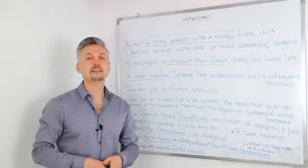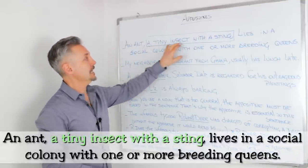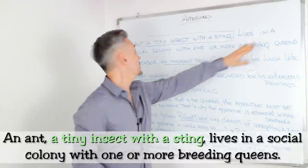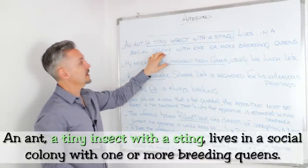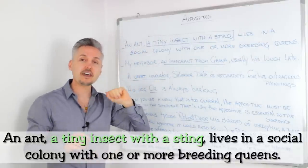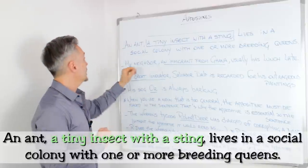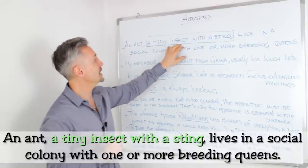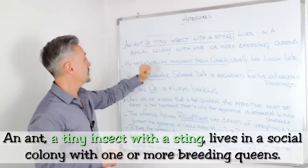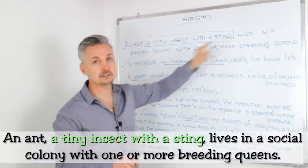So let's look at the examples now. An ant, a tiny insect with a sting, lives in the social colony with one or more breeding queens. This is longer than the one that I gave you at the beginning of the lesson. In this case, we have 'a tiny insect with a sting' as the appositive, and it is between two commas, as you can see.